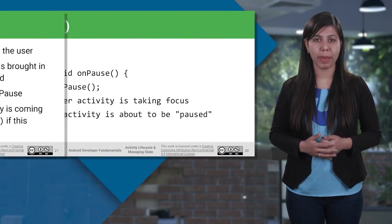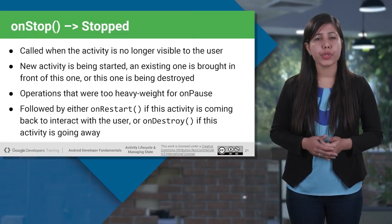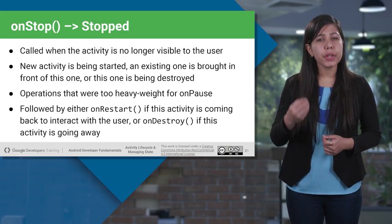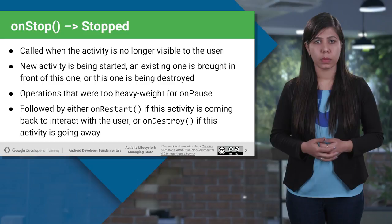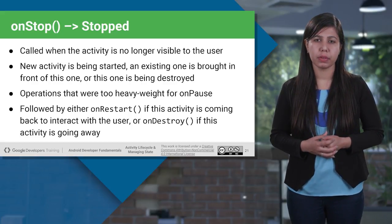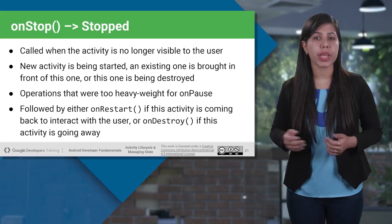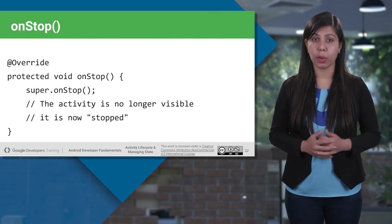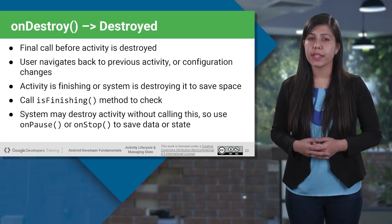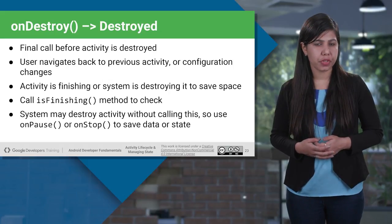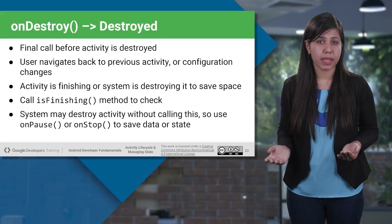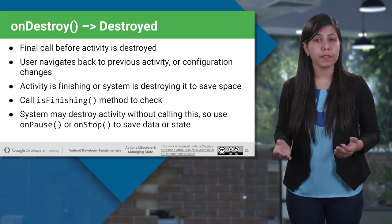onStop is called when the activity is no longer visible to the user — when a new activity is started and brought to the front, or the current one is being destroyed. It is followed by onRestart if the activity is coming back to interact with the user, or onDestroy if the activity is going away. onDestroy is the final state where your activity is destroyed, navigating the user back to the previous activity or called if configuration changes. It calls the isFinishing method. Remember, the system may destroy the activity without calling onDestroy, so use onPause or onStop to save data or state.